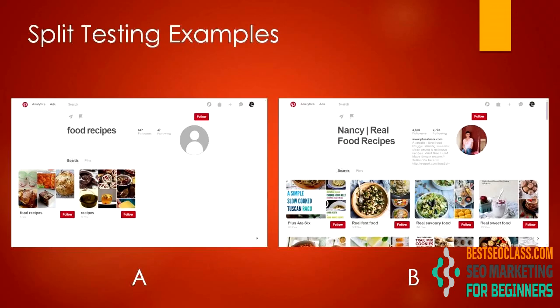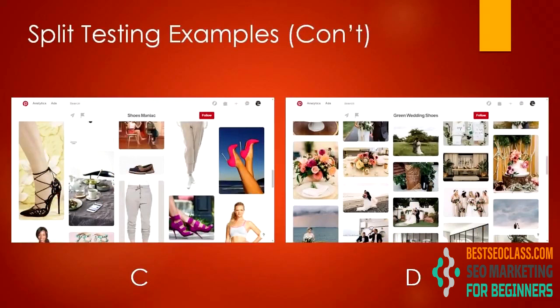By comparing figure C and D, we notice that both accounts created some good pins, but figure D is more consistent in its niche. The user in figure D posted everything related to weddings and standardized their theme. As for figure C, the pins are good on their own but lack consistency — it's clear they're doing a business related to shoes, but their pins are a mix of shoes, clothes, and some other random pictures, which will definitely confuse followers.